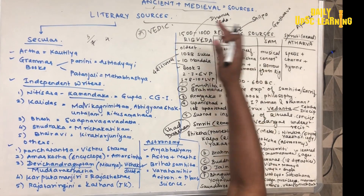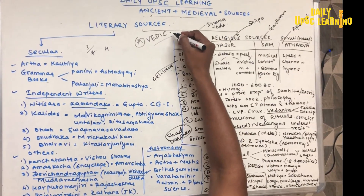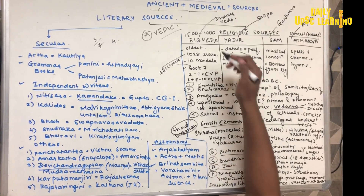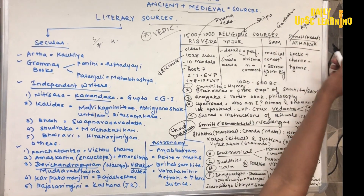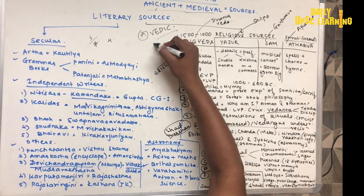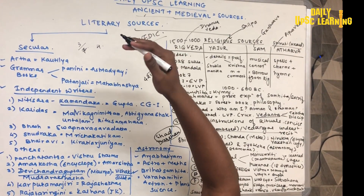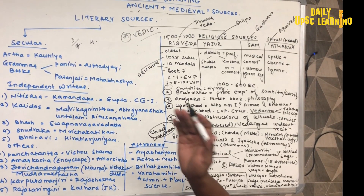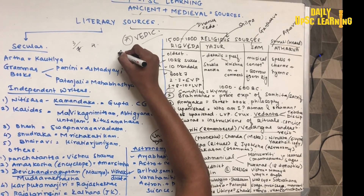In religious sources, there are many parts. First of all, Vedic literature. In Vedic literature, there are four parts: Rigveda, Yajurveda, Samveda, and Atharvaveda. These Vedic people were Indo-Aryans. They came from Central Asia and Western Asia, and they settled down in this area, that is western India — the Saptasindavay area.